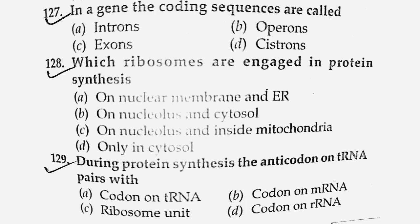Next question: The gene coding sequences are called — topoisomer, intron and exon, or exon? The coding sequences of a gene are called exons. Option number — coding sequence is exon.